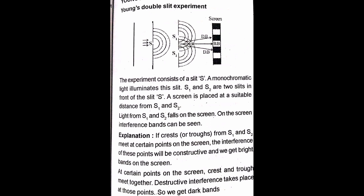In front of S₁ and S₂ we place a screen where we can see bright and dark fringes. That is the Young's double slit experimental setup.